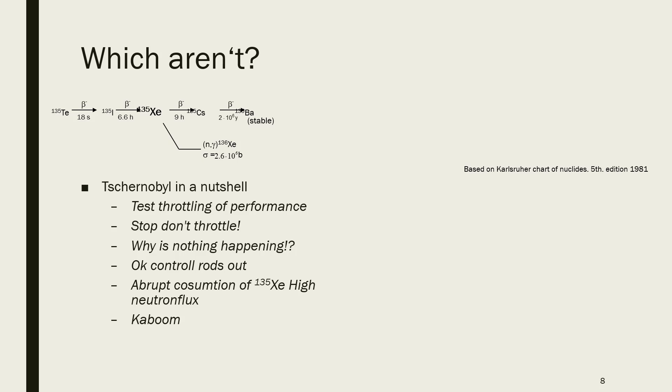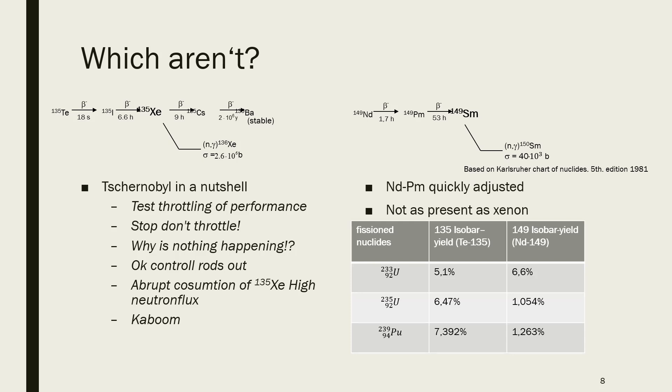There's another one, which is the Samarium-149. And this also has a very high neutron capture cross-section of 40,000 barns. So this is quite high, but it's not as much of an issue as Xenon-135. As you can see here, the isobaric yield or the chain yield in this example for the Uranium-235 is that you get the 135 isobar, which makes up 6.47% of all your fission products.